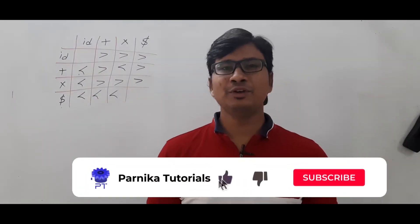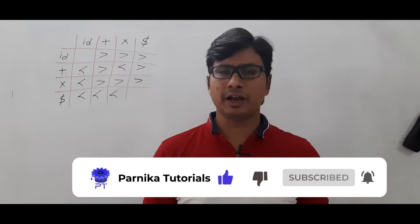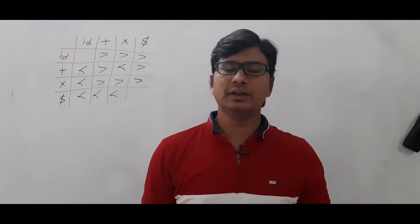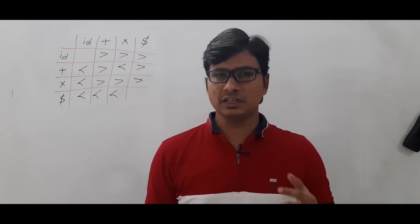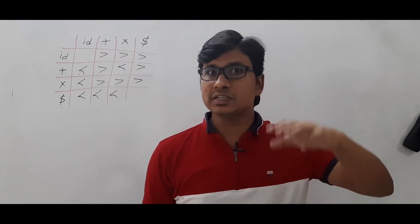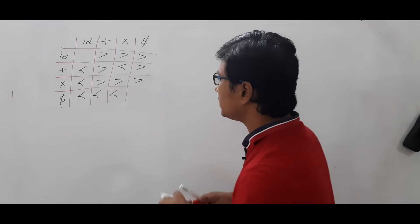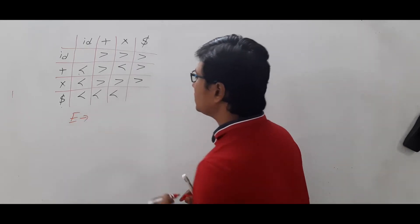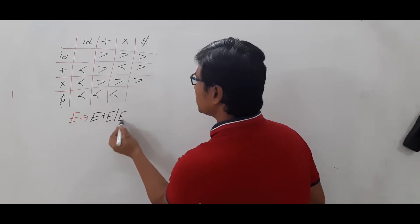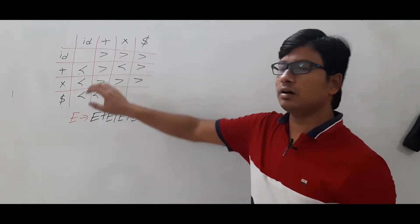Good morning friends, welcome to Pannika Tutorials YouTube channel. In the last video I discussed operator grammar and the operator precedence parser. I took one grammar, constructed the operation relational table, and got the parsing tree. The grammar we used was: E → E plus E | E multiplication E | id.